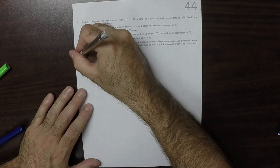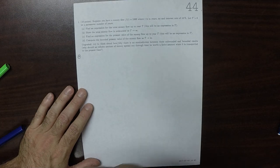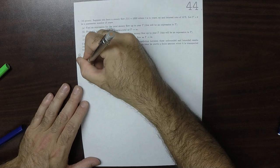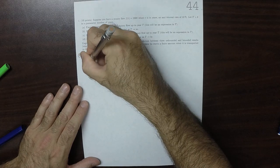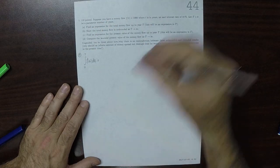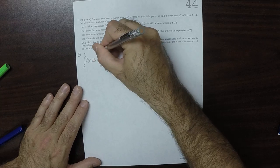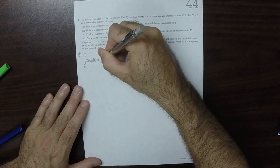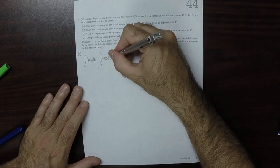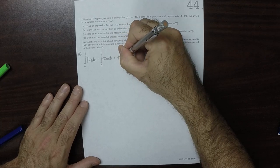Okay, so the answer to part a, the total money flow, is integral zero to big T, f of little t dt. And the only thing that we're given is f of little t. So that's integral zero to big T of 1,000 dt. Well, that's simple enough. The answer is 1,000 times big T.